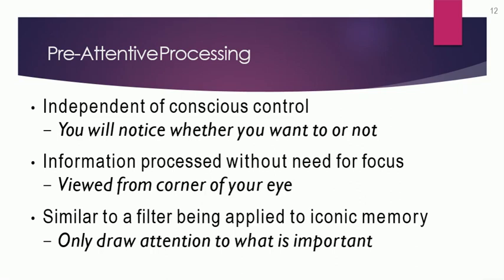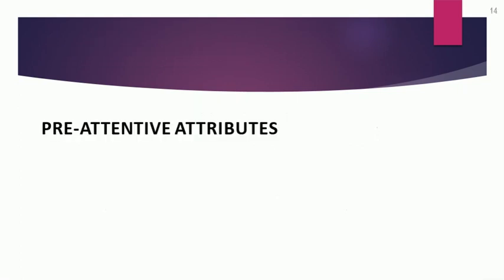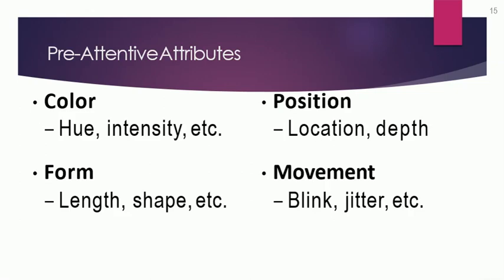Different techniques such as coloring, movement, form, position, and length all combine together to give you the storage of your pre-attentive processing of your visualization. We have basically four kinds of pre-attentive attributes: color, form, position, and movement. These four attributes can be combined together in your visualization and they perform different kinds of perception.